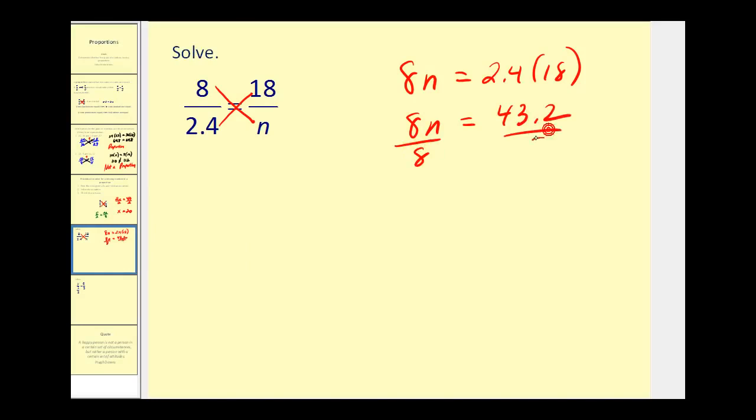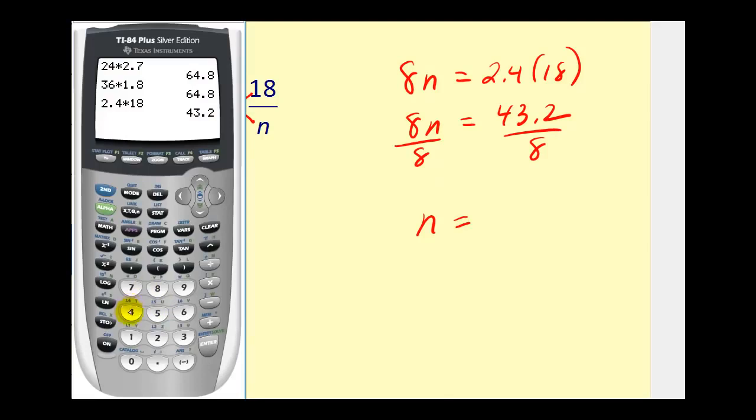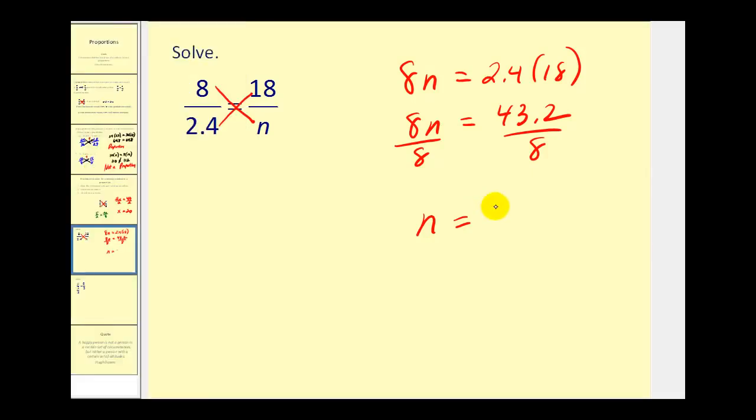Now dividing both sides of the equation by 8, we can determine the value of n. And it looks like n is equal to 5.4. So 8 times 5.4 would equal 2.4 times 18, and if you want, you can go ahead and check that.